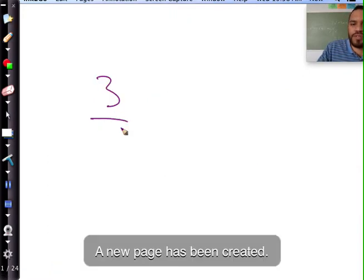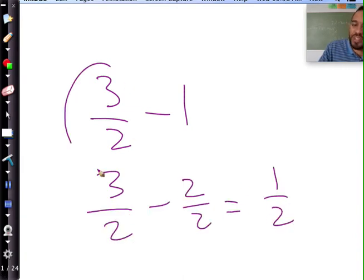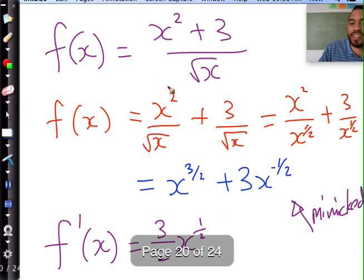People, 3 over 2 minus 1 is the same as 3 over 2 minus 2 over 2 which is the same as 1 over 2 and that's 1 and a half. Take away 1, you're left with a half.